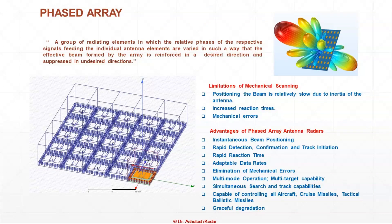The advantages of phased arrays over mechanical scanning are: in mechanical scanning, the positioning of the beam is relatively slow because of the inertia of rotary systems. Servo motor systems or mechanically moving systems steer the beam, all inhibited by the inertia of the rotation mechanism. This increases reaction time to targets and introduces mechanical error leading to beam pointing error. With phased arrays, the beam rotation is done electronically — instantaneously you can position the beam.